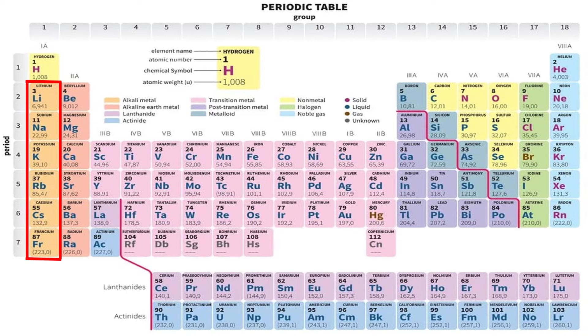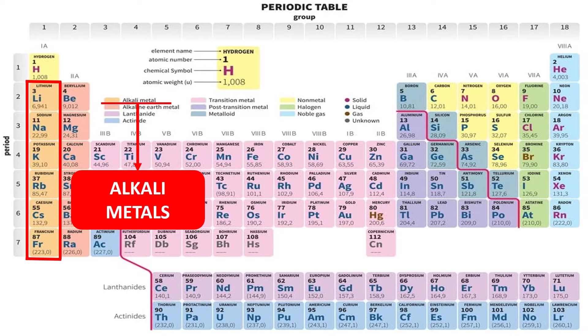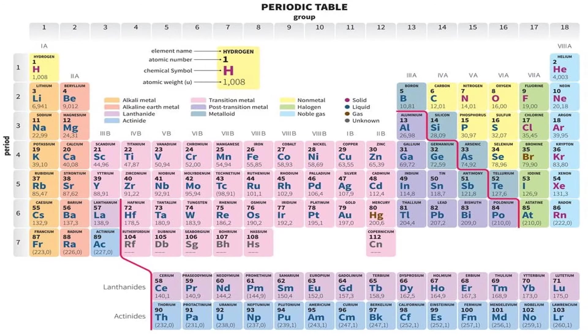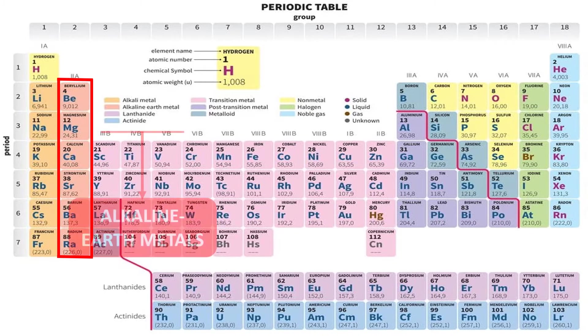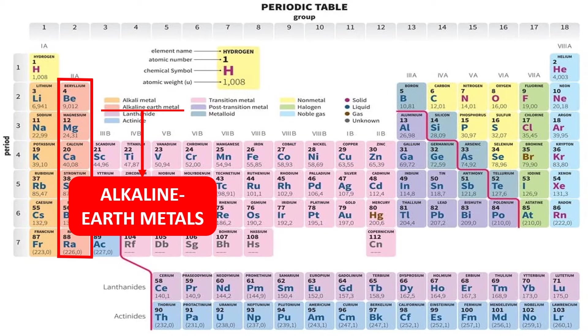Another one, this group: the lithium, sodium, potassium, rubidium, cesium, and francium are all called alkali metals. Next to that, these elements are called alkaline earth metals.